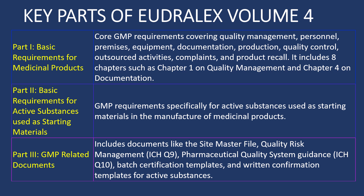Part 2 is for basic requirements for active substances used as starting materials. And finally, Part 3 is for GMP related documents like site master file, quality risk management, ICH Q9, ICH Q10, batch certification templates and return confirmation templates for active substances.